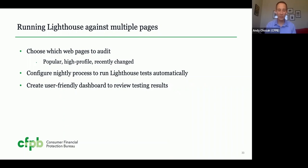We can also write software to have a computer run Lighthouse automatically on a schedule. First, we choose which pages to test — starting with the most popular or high-profile pages like the site homepage, and ideally pages that have recently changed, since new content or functionality can introduce accessibility bugs. We write software to configure a nightly process to run the tool automatically against selected pages, collect all test results in a single place, and create a user-friendly dashboard that lets our team easily review results and take action to fix discovered issues.